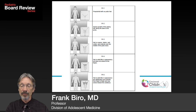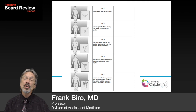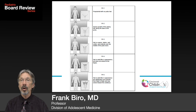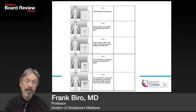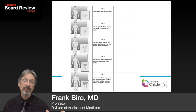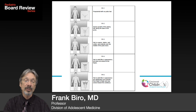Pubic hair stage 1 is no pubic hair. Stage 2 is fine, downy hair along the base of the penis. Stage 3 has darker, coarser, curlier hair extending thinly over the middle of the pubic bone. Stage 4 has adult-quality hair that has not yet extended from thigh to thigh. Stage 5 is adult hair from thigh to thigh with the male escutcheon extending toward the belly button.